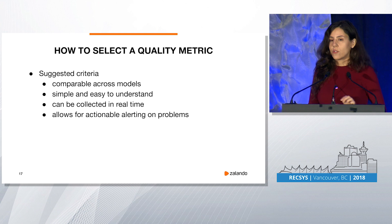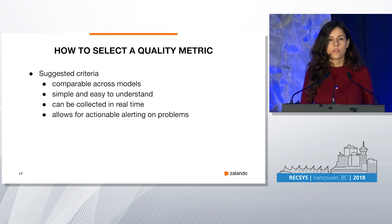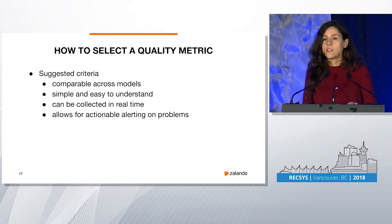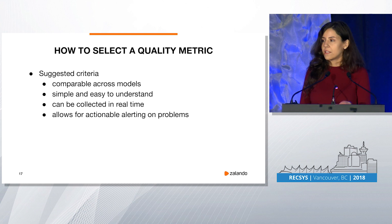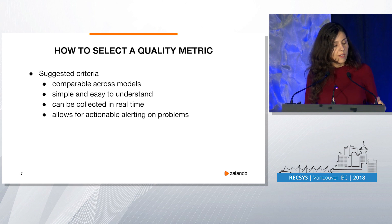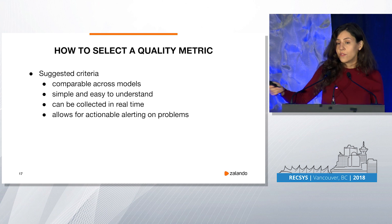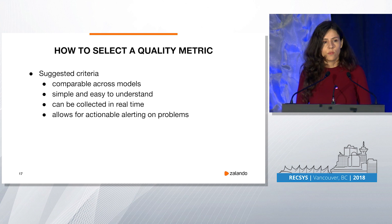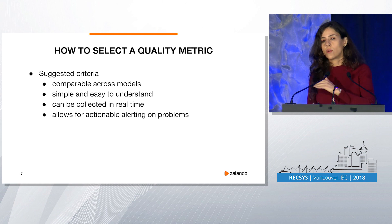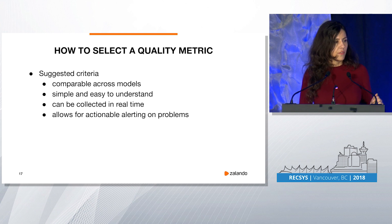It should be comparable across models, so you can switch different models and see how quality behaves — don't choose anything you can only get for the specific model you use. It should be simple and easy to understand, so your developers and your product team understand what you're going for. And it should be collected in real time so you can immediately see if something starts going wrong. Also, choose something that allows actionable alerting. For example, if you included return rates for articles, there would be a huge time lag — you'd be wondering what went wrong four weeks ago. We want to measure exactly at the point where you return to your users.